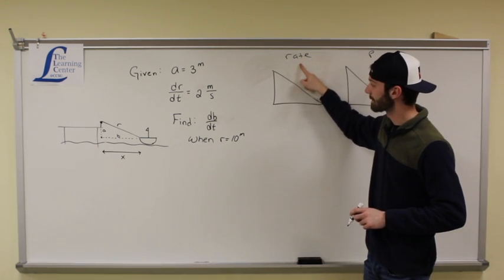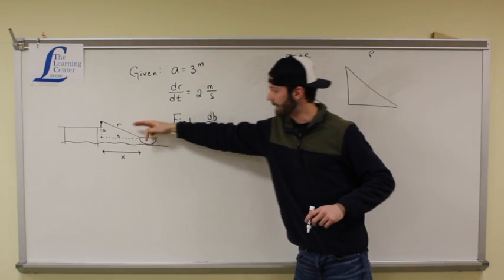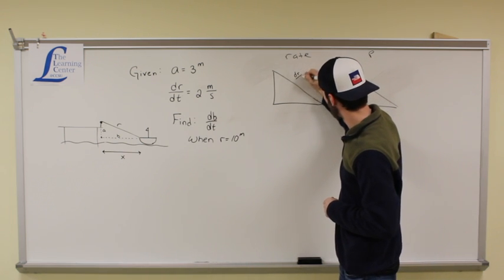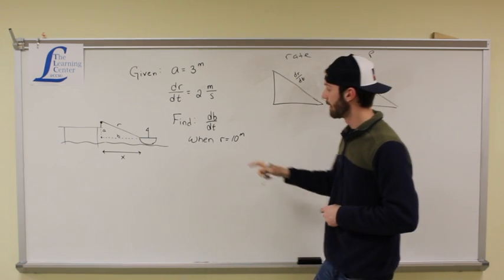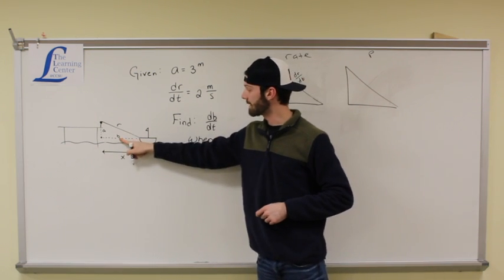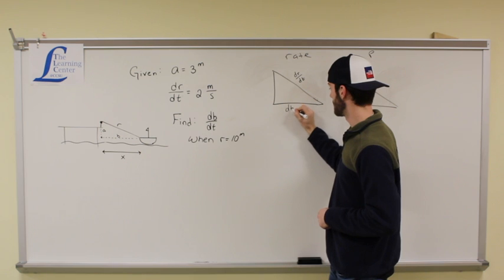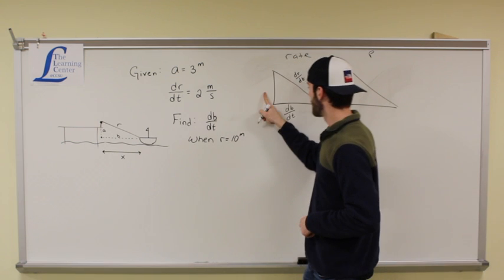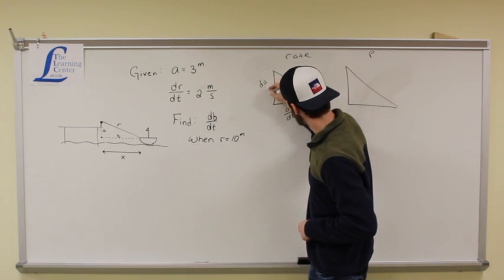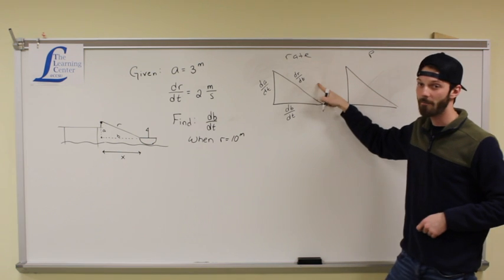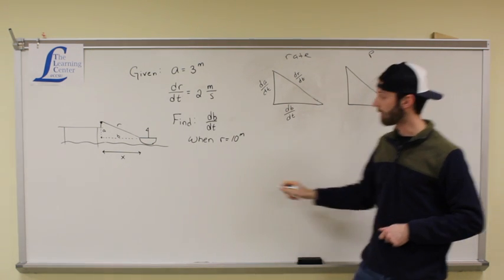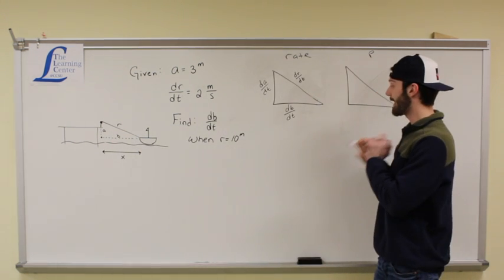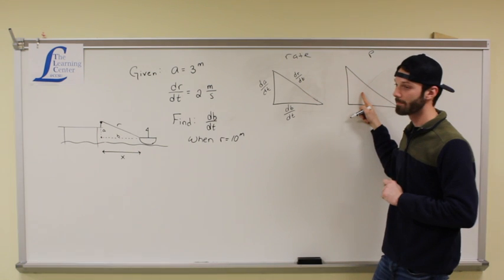As for the rates, we know the rate dr/dt. This side of the triangles are, so this guy is going to be dr/dt. We want to find db/dt. This side is b, so this guy must be db/dt. And we also know that this side is a, this side must be da/dt. That's my rates. This is how fast everything is moving from point b to a or r. That's how fast everything's moving.